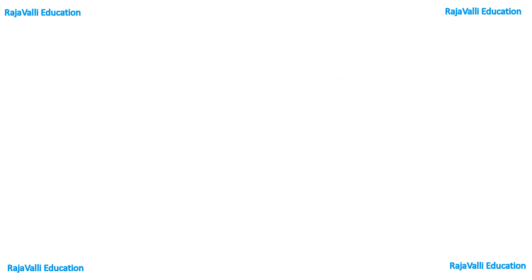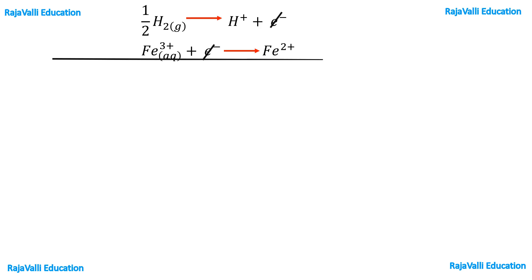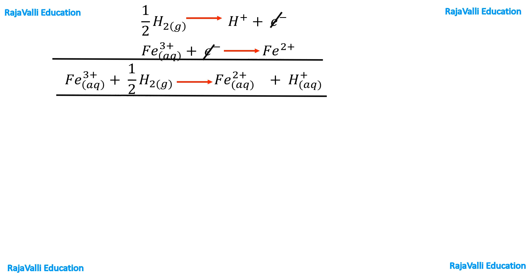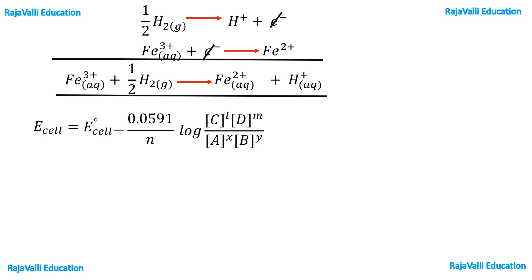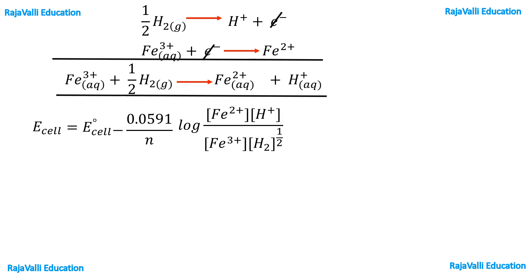Adding the anode and cathode half-cell reactions, we get the overall cell reaction: Fe³⁺ + ½H₂ → Fe²⁺ + H⁺. This is the Nernst equation. We have to modify the Nernst equation according to our overall cell reaction. Here, N is the number of electrons involved, which is 1, and the concentration of H₂ is 1 for all molecules.